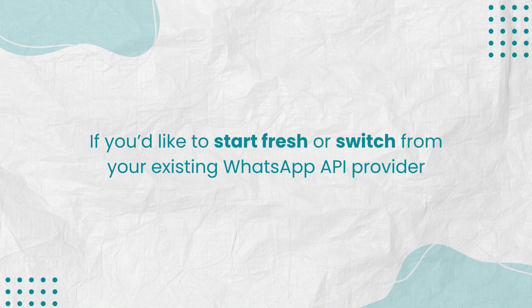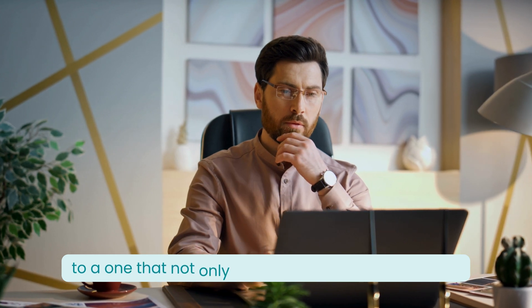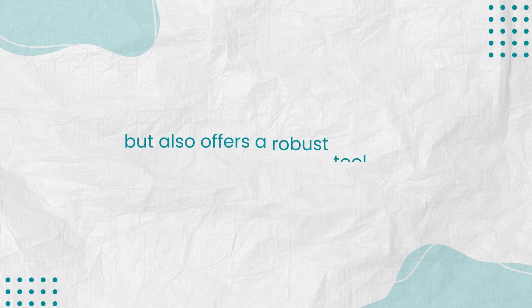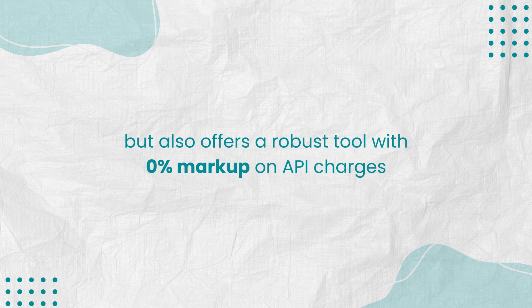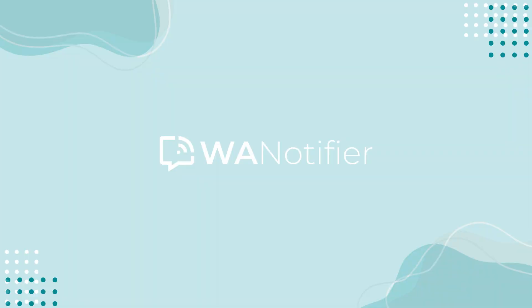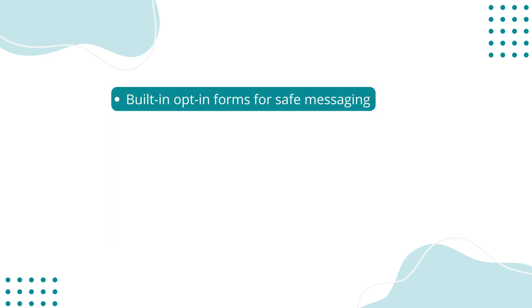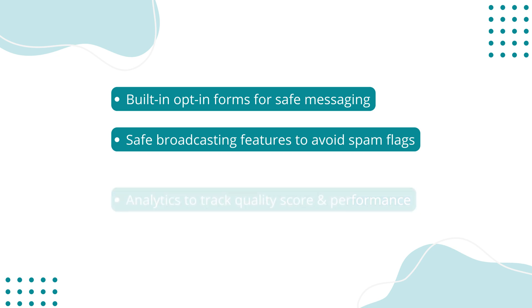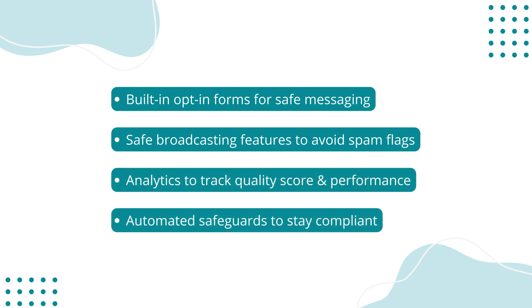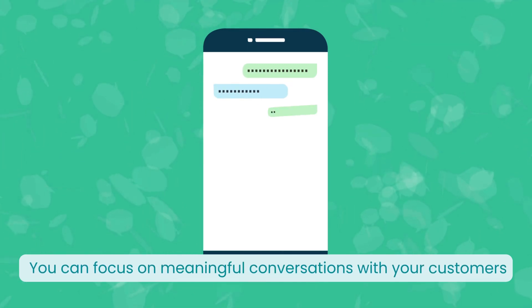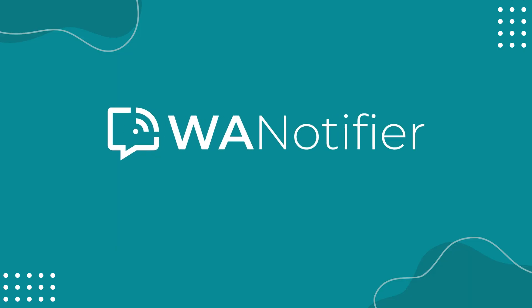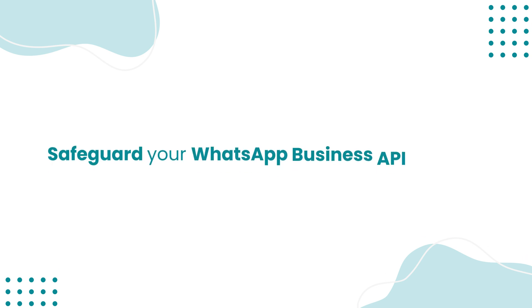If you'd like to start fresh or switch from your existing WhatsApp API provider to one that not only educates you on these matters but also offers a robust tool with 0% markup on API charges, check out WA Notifier. We make prevention and compliance easier by giving you the right tools from the start — built-in opt-in forms, safe broadcasting features, analytics to track your quality score, and automated safeguards to keep your account compliant. Sign up for WA Notifier today to safeguard your WhatsApp Business API account and build stronger customer connections.